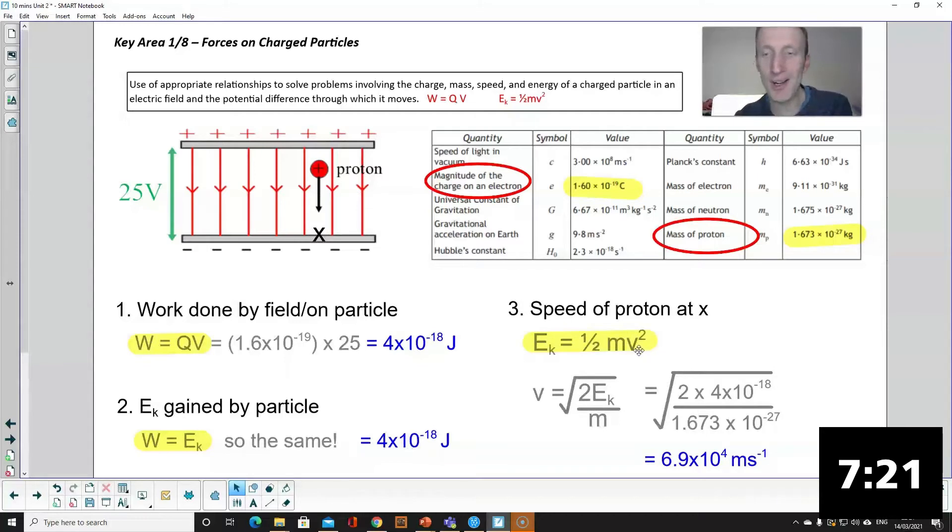Kinetic energy you know. M is the mass of the particle and again that comes from your datasheet. Just note at no point did you put in the distance between the two plates. So if you half or double the distance between the plates it does not affect the final speed. That doesn't come into any of these equations.